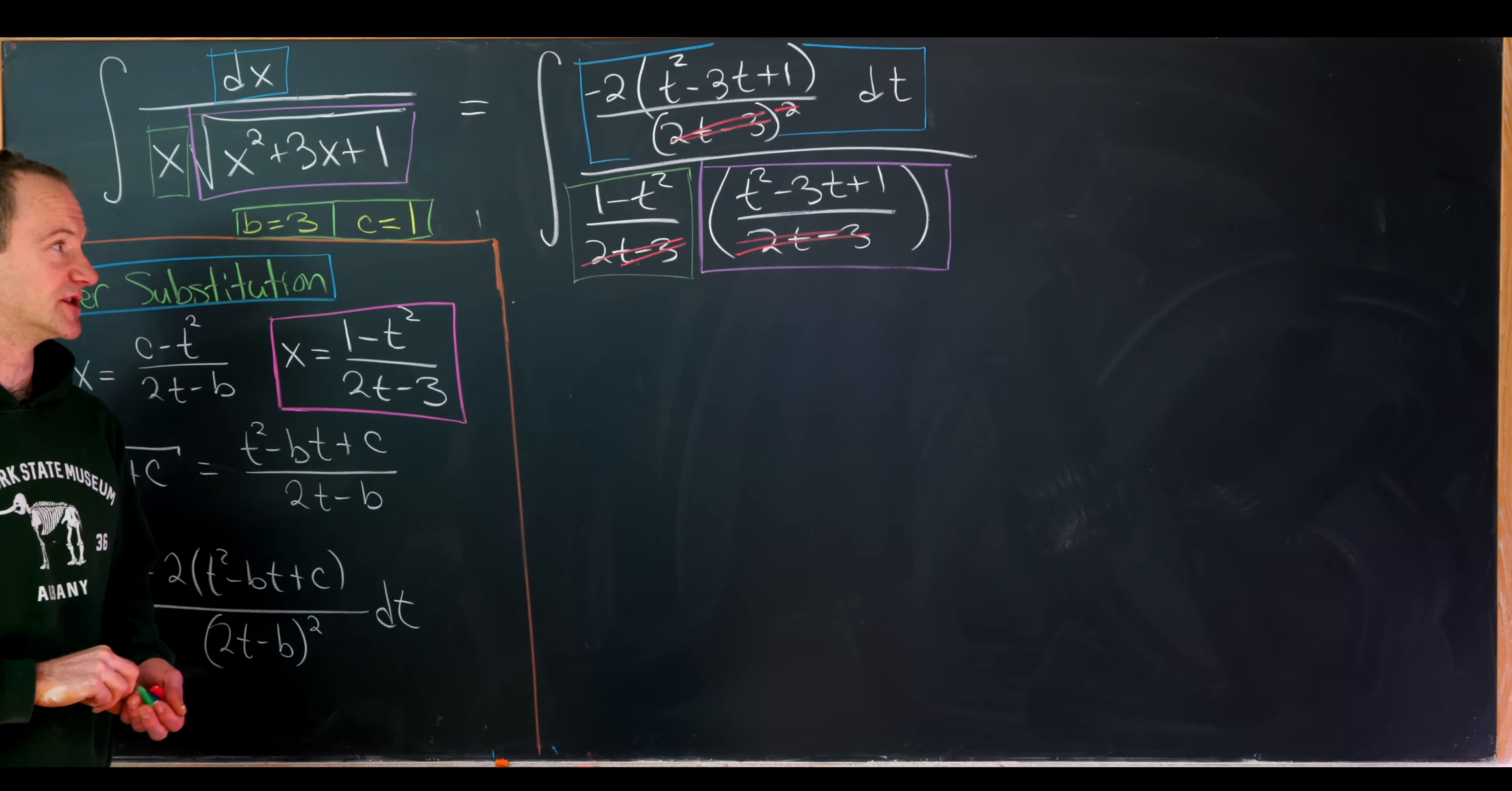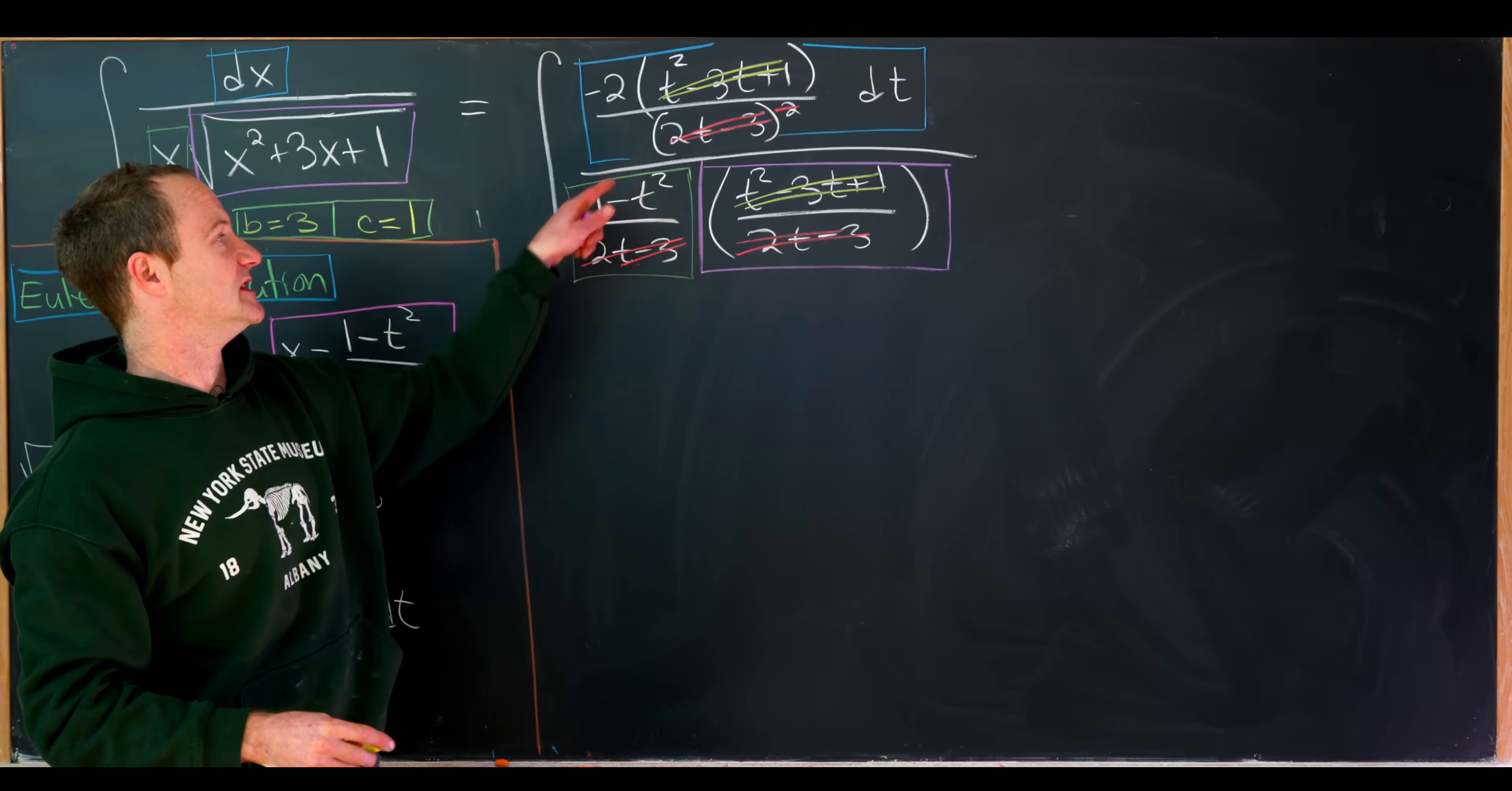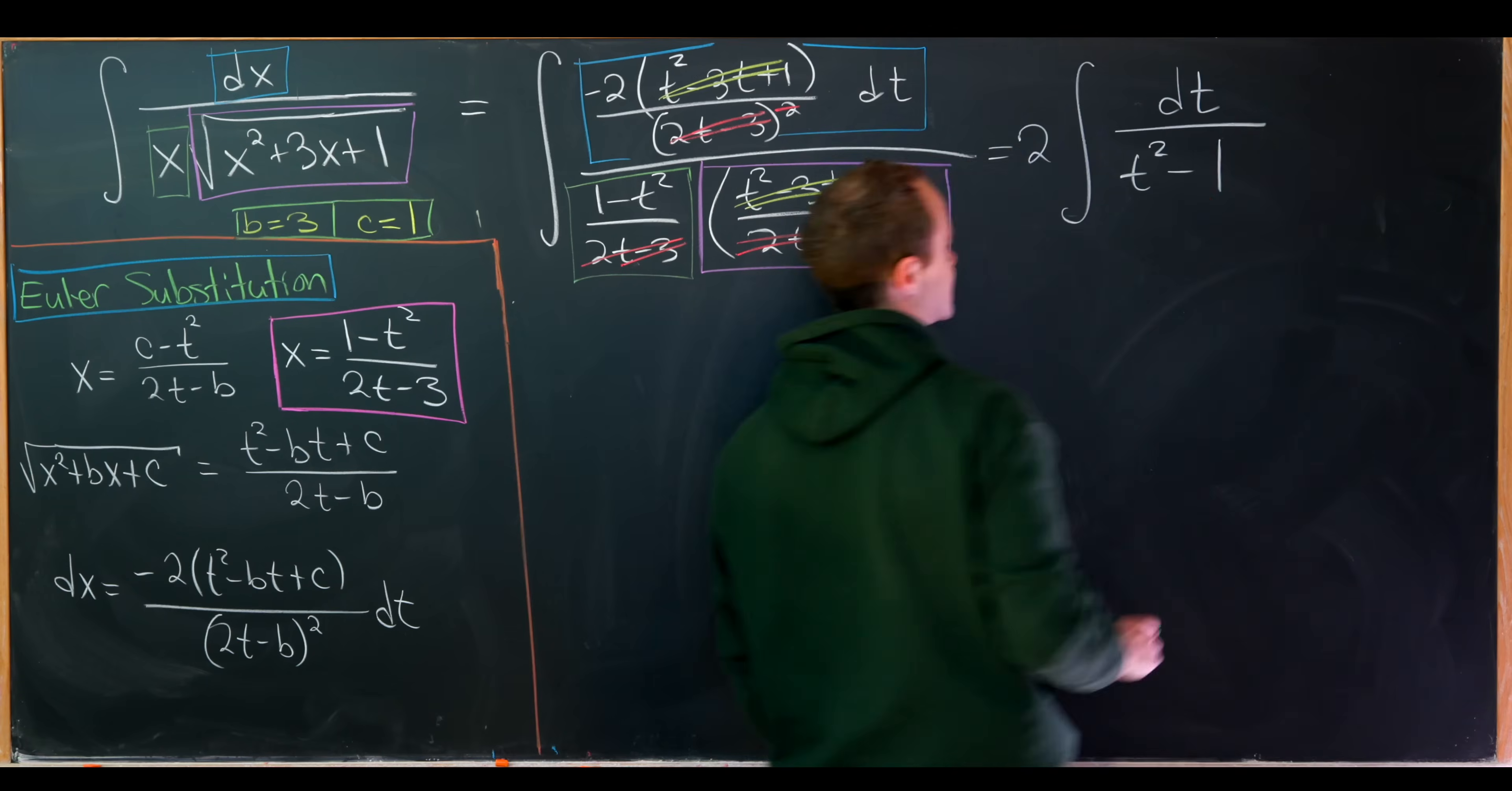Okay, so that's off to a good start. And then we have this t squared minus 3t plus 1 and this t squared minus 3t plus 1, which will also cancel. And now notice we're not left with very much. We have negative 2 dt over 1 minus t squared. So we could maybe bring the 2 out and change the sign to change the order of subtraction. That leaves us with dt over t squared minus 1.